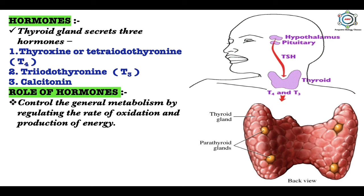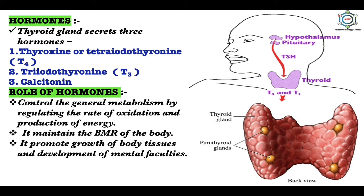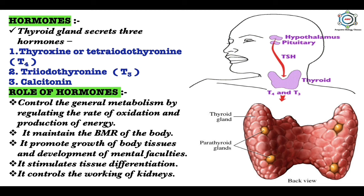The thyroid gland controls general metabolism by regulating the rate of oxidation and production of energy. It maintains the basal metabolic rate (BMR) of the body, promotes growth of body tissues and development of mental faculties, stimulates tissue differentiation — thus affecting metamorphosis of a tadpole into an adult frog — and also controls the working of the kidney, as deficiency results in decreased urine output and vice versa.